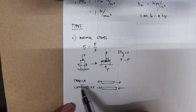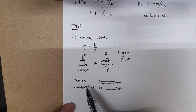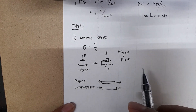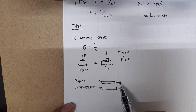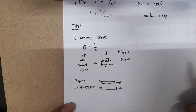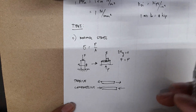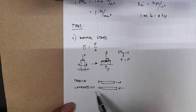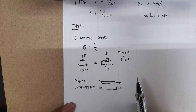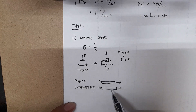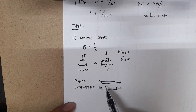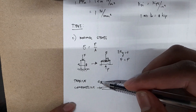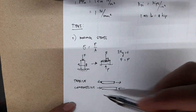Normal stress can be tensile or compressive. Tensile stress is caused by tensile forces directed away from your member, and it tends to stretch or elongate the member. Compressive stress is caused by compressive forces and tends to compress, contract, or shorten your member. Notice that in both cases, the forces are perpendicular to your area.